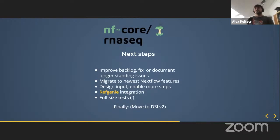There have been discussions about allowing a design input file, like ATAC-Seq, ChIP-Seq, and some other pipelines do, to enable more steps. For example, there was a discussion about running some preliminary differential gene expression analysis in the pipeline — at least a very basic one or providing a script that can be used for that.